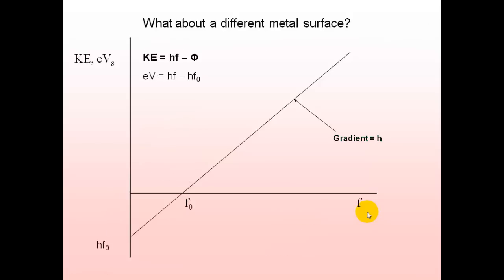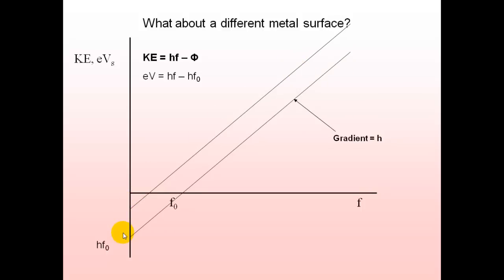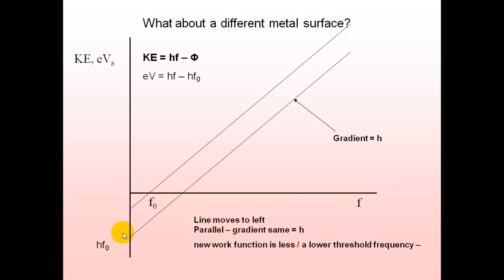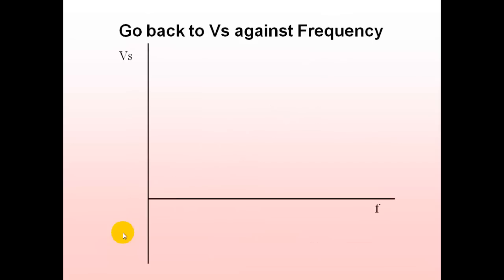For a different metal surface, the work function is different, so hF₀ changes. The graph shifts to a parallel line with the same gradient h but a different work function and threshold frequency. A line shifted to the left has a lower threshold frequency, meaning electrons are ejected more easily — indicating a more reactive metal.